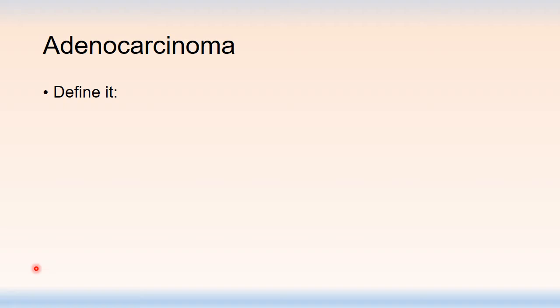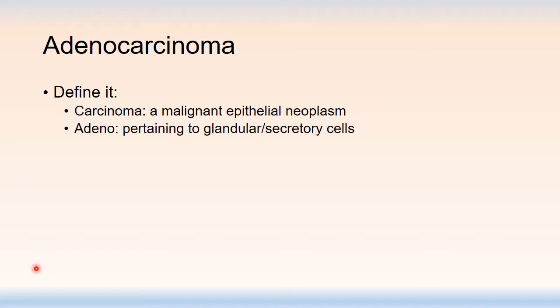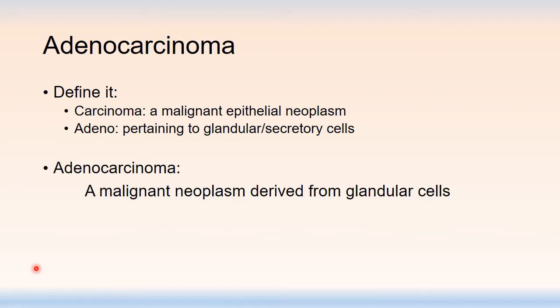Let's start off with the most common lung cancer, adenocarcinoma. If we do nothing more than define it we'll find a wealth of information just in the name. Carcinoma means a malignant neoplasm of epithelial cells. If we put the prefix adeno in front of it we are specifically talking about glandular or secretory cells. Putting them together, it is a malignant neoplasm derived from glandular epithelium.